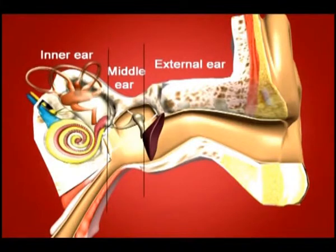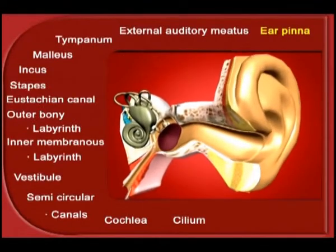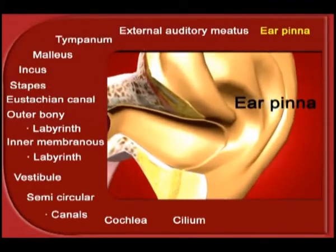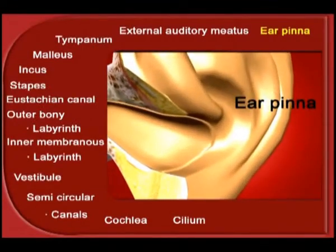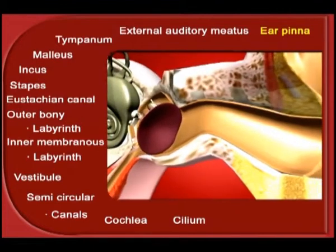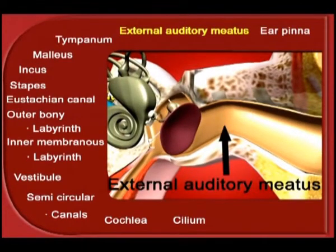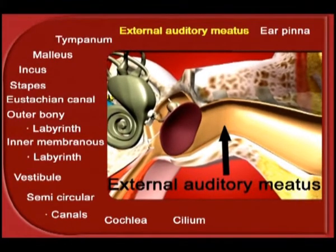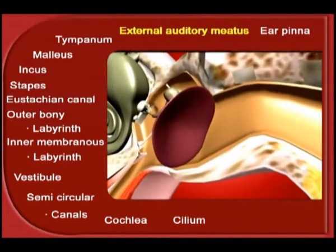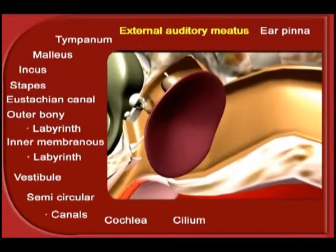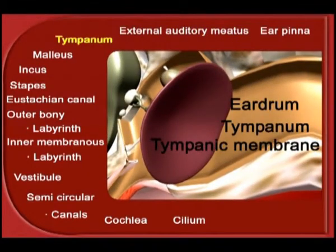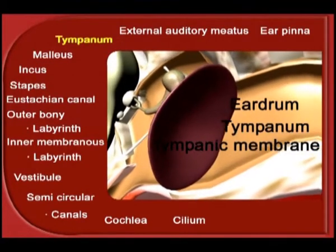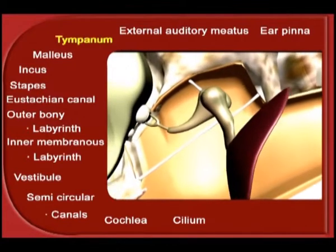The human ear can be broadly classified into three parts: the external ear, the middle ear, and the internal ear. The visible part of the ear is called the external ear or the ear pinna. This is connected to a tunnel-like passage called the external auditory meatus, which is connected to the delicate membrane-like structure called the ear drum or the tympanic membrane, or tympanum.